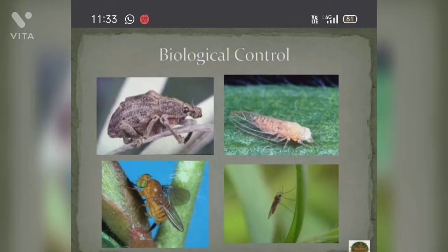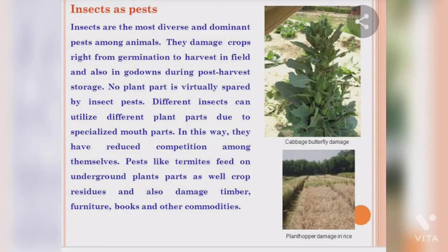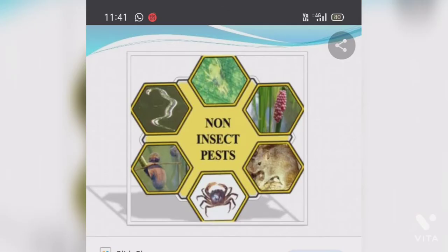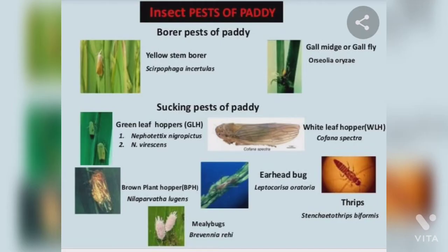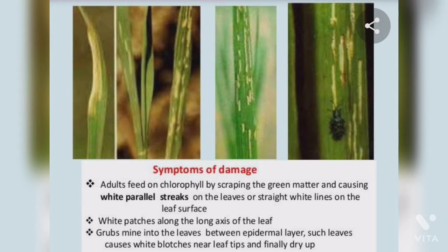Crops also need protection from pests and diseases. What are pests? Pests are organisms that attack and damage the crops. They may be rats (rodents), locusts, weevils, termites, and many more. These pests can be controlled by pesticides, which include rodenticides and insecticides.